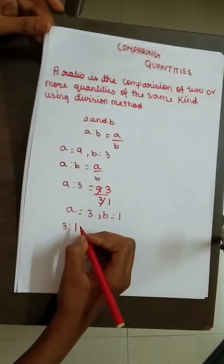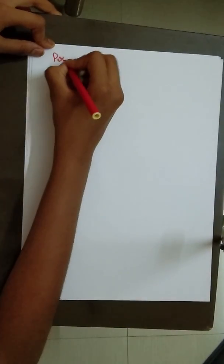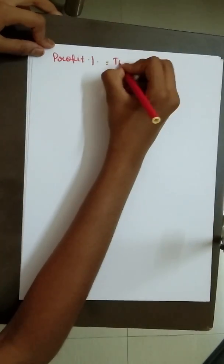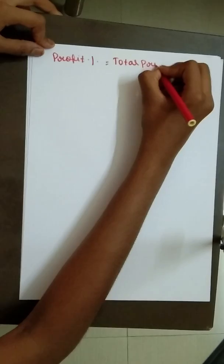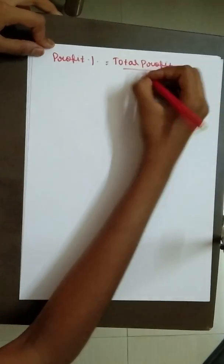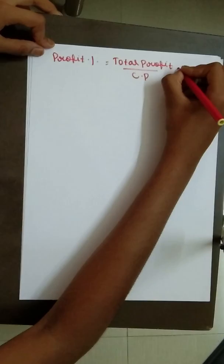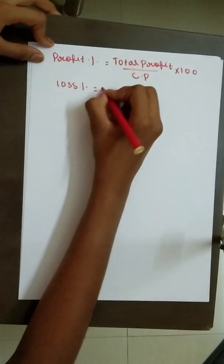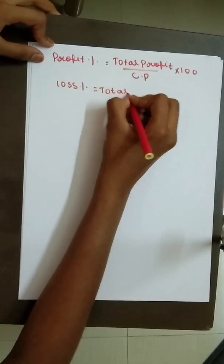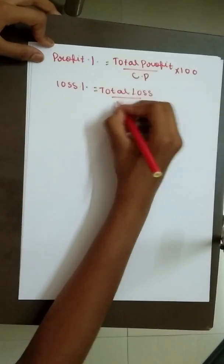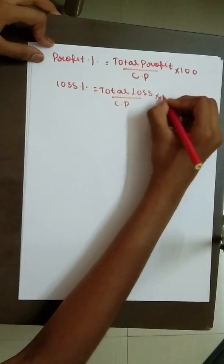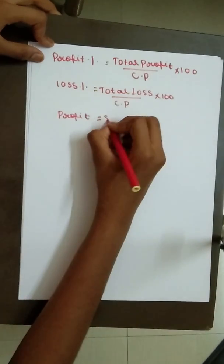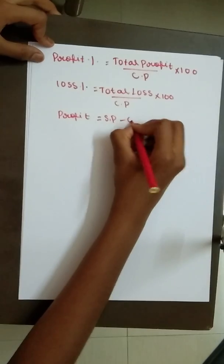Now we can see about formulas. Profit percent: total profit by cost price into 100. Loss percent: total loss by cost price into 100. Profit: